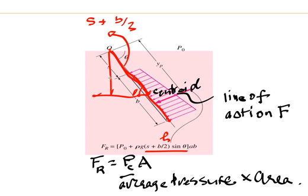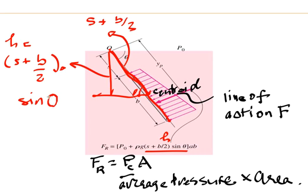This point O to the centroid. Since this is theta, and this one, which is H actually, this is the depth from which you want to measure what is your average pressure. And this length here is actually this times the sine of theta. So I have H equals to S plus B over 2 times sine of theta. And this is this depth here.